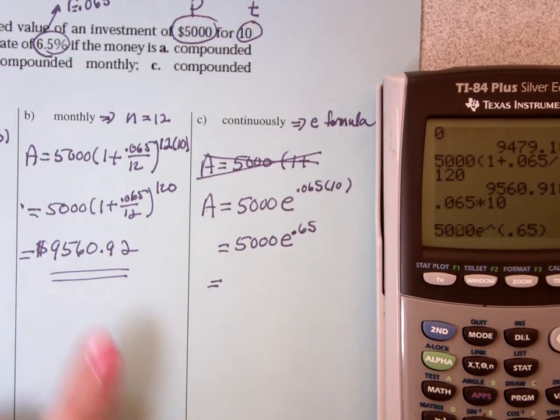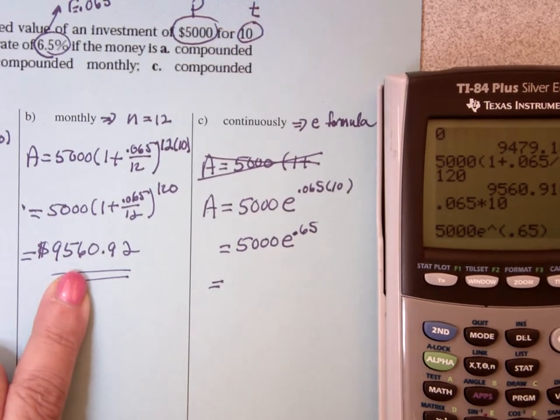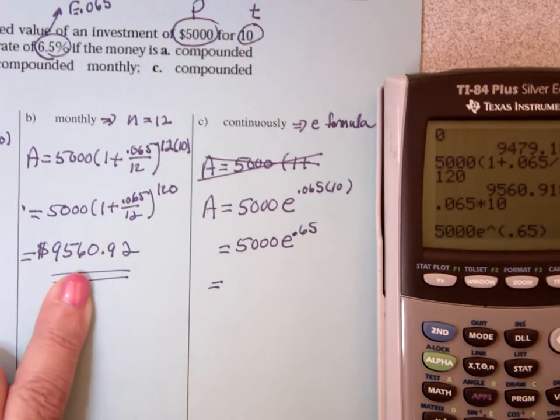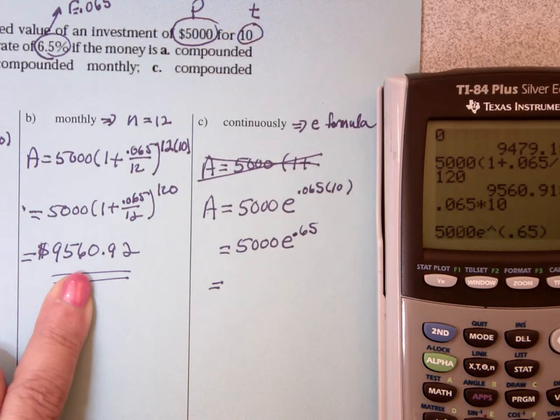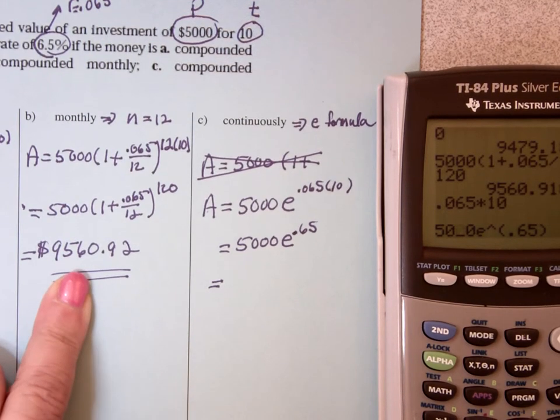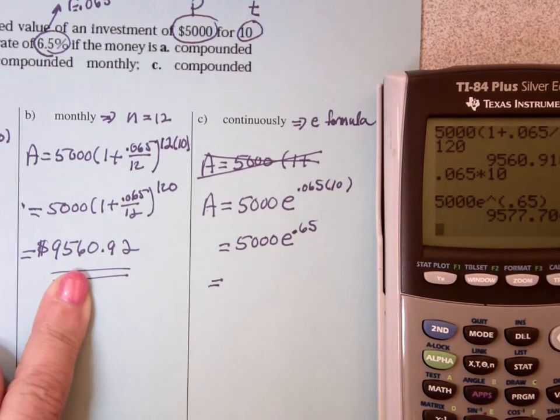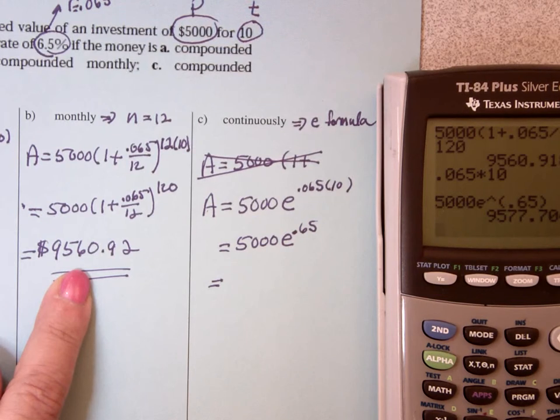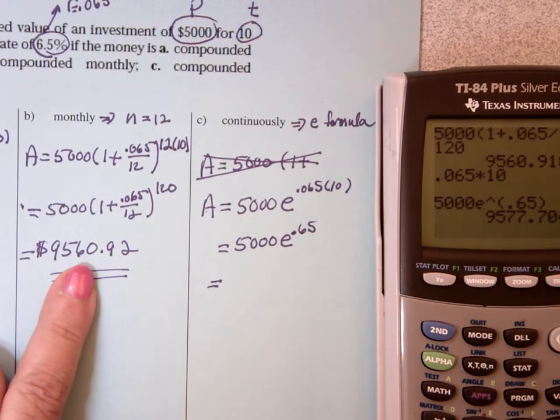E to the .065. And it should be bigger than 95. Why do I know that? Because it's going all the time. Right? Not much. $9,577.70.